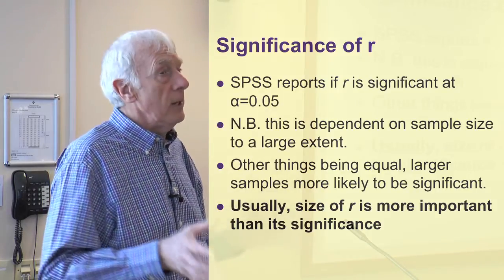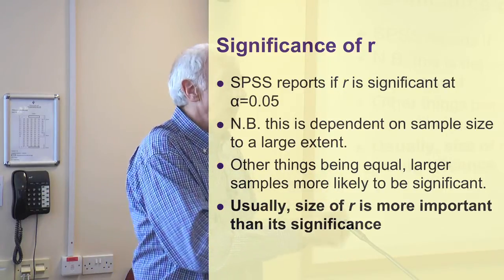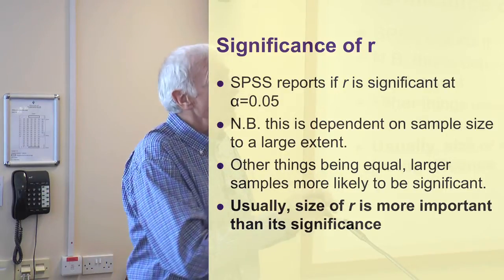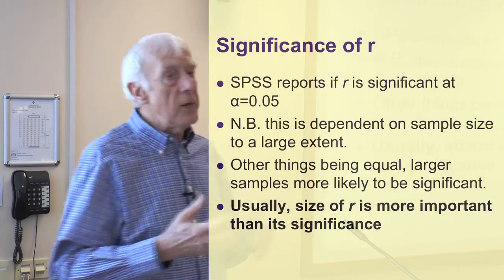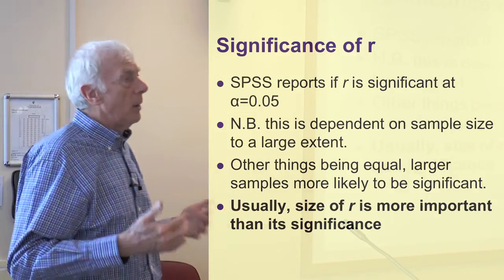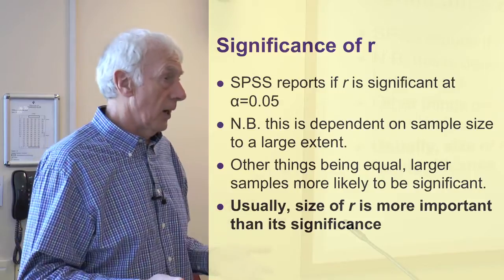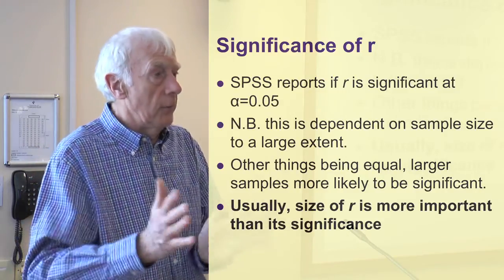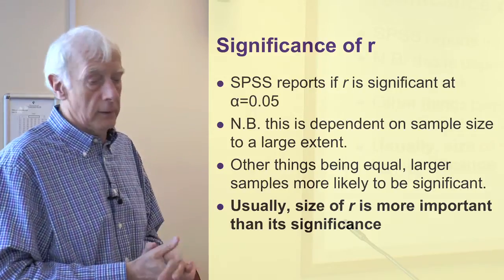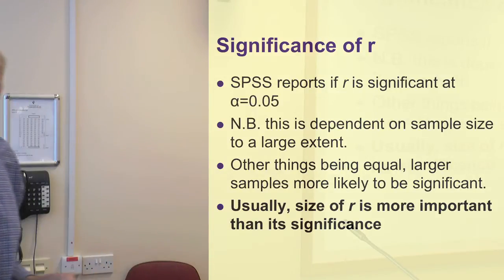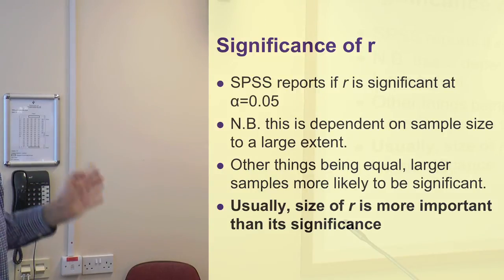We know the correlation is almost certainly there and it's explaining something, but not very much because the value is so small. So in the case of correlations, we pay much more attention to the actual value of Pearson's r being 0.7 or above rather than the significance of the correlation. Remember: size of the correlation is more important than its significance.